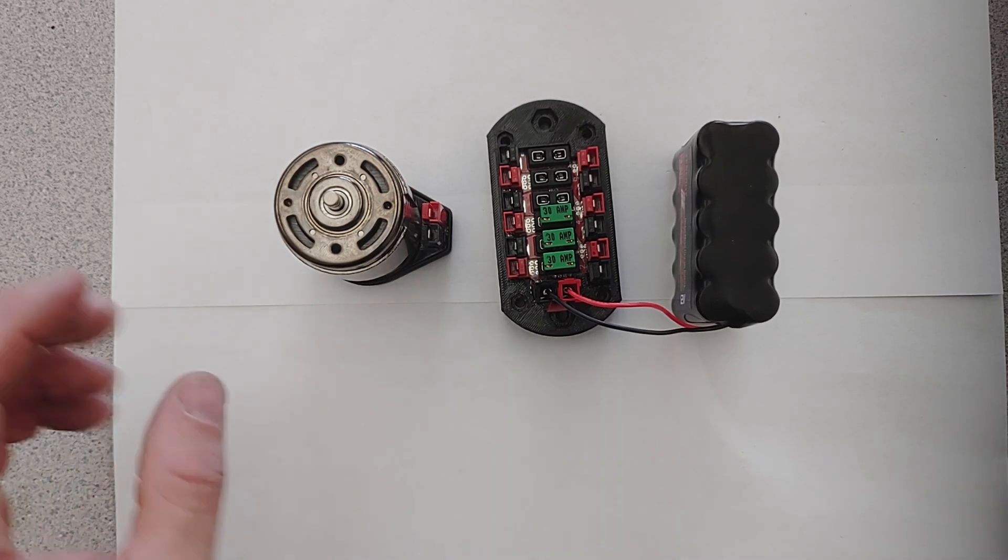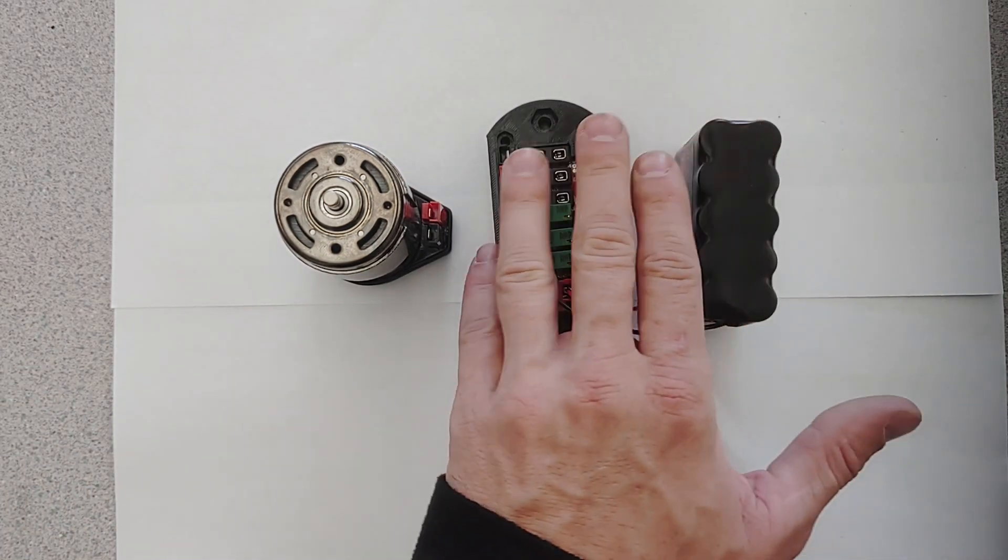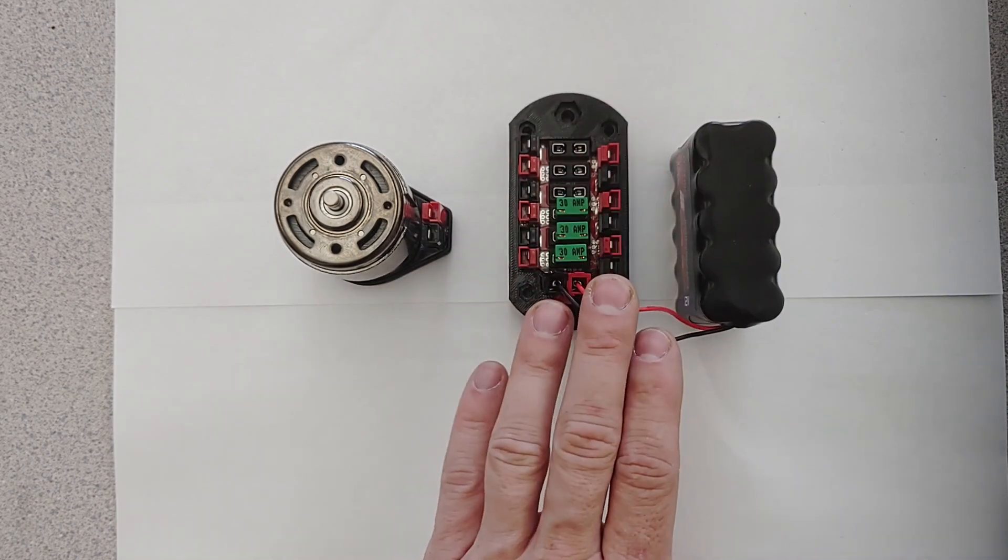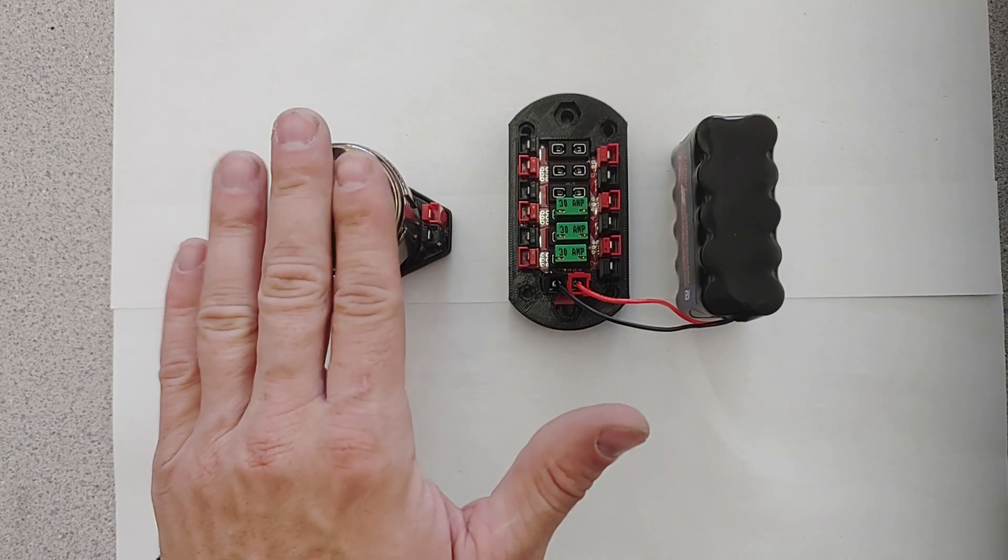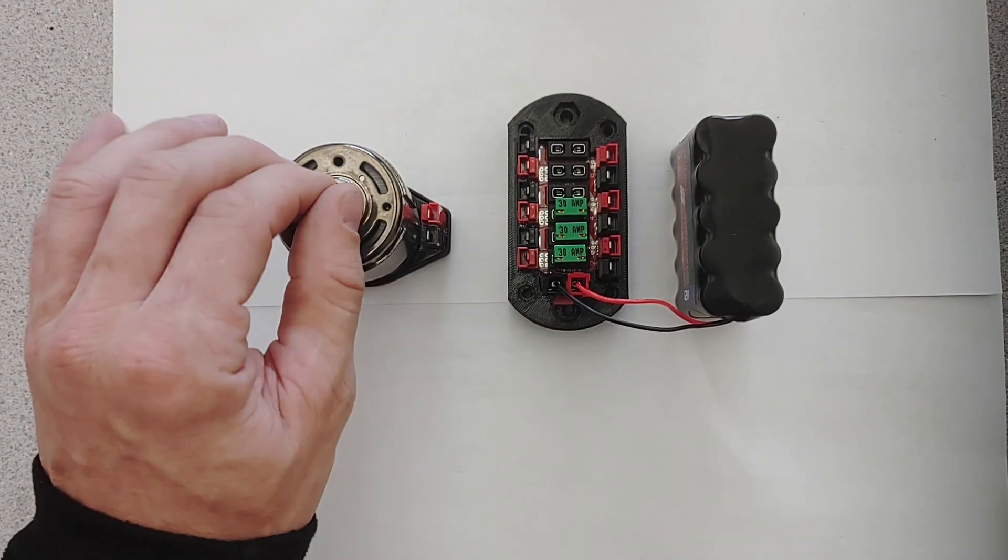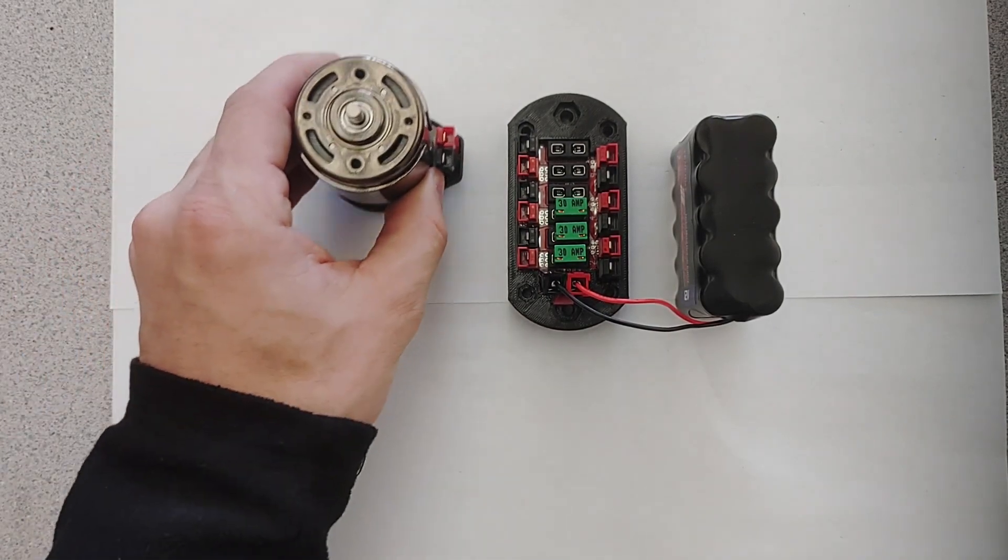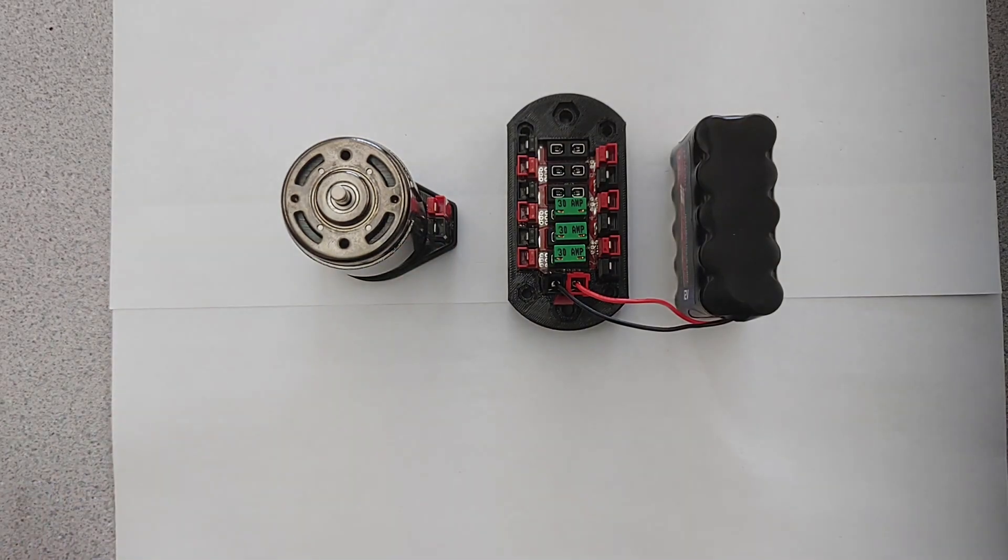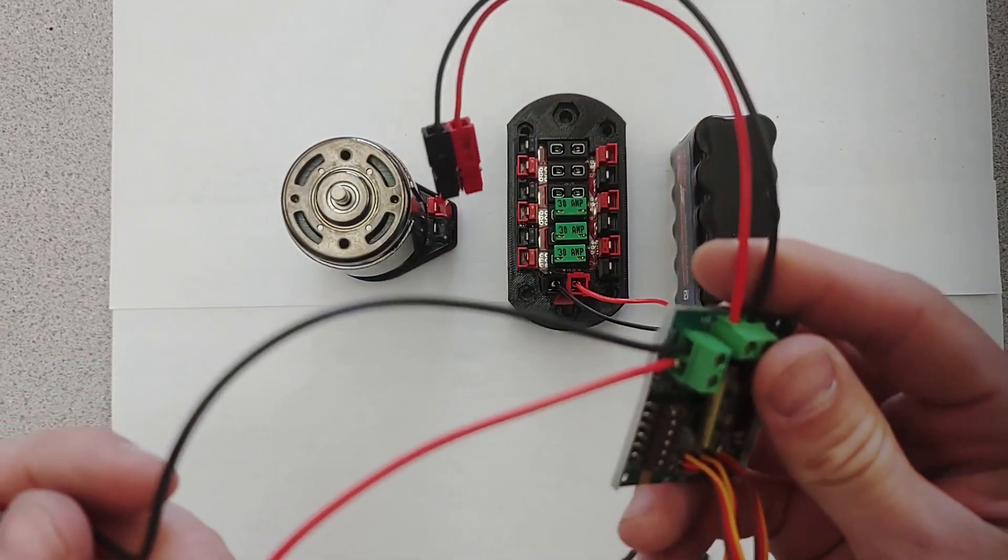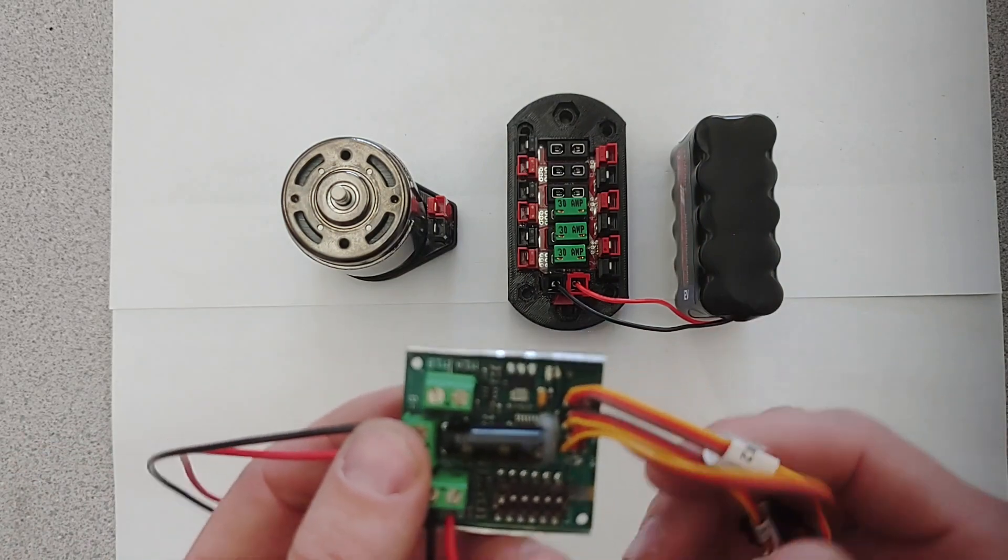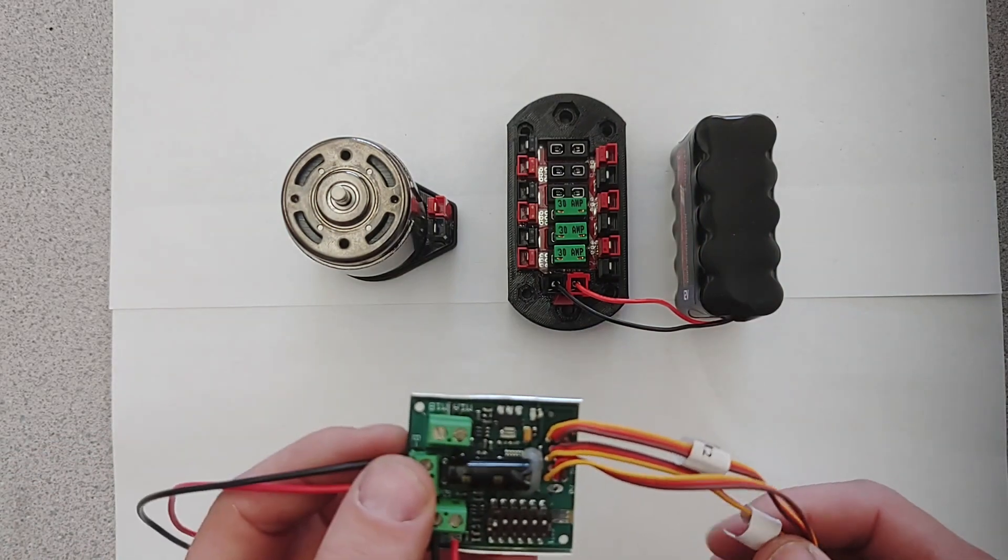In this video, what we're going to show is how to get our battery to our distribution board, which we've already set, but how do we get that power from here into our motor over here and have control over it? So what we're going to do is we are going to interconnect our speed controller and our receiver to make that happen.